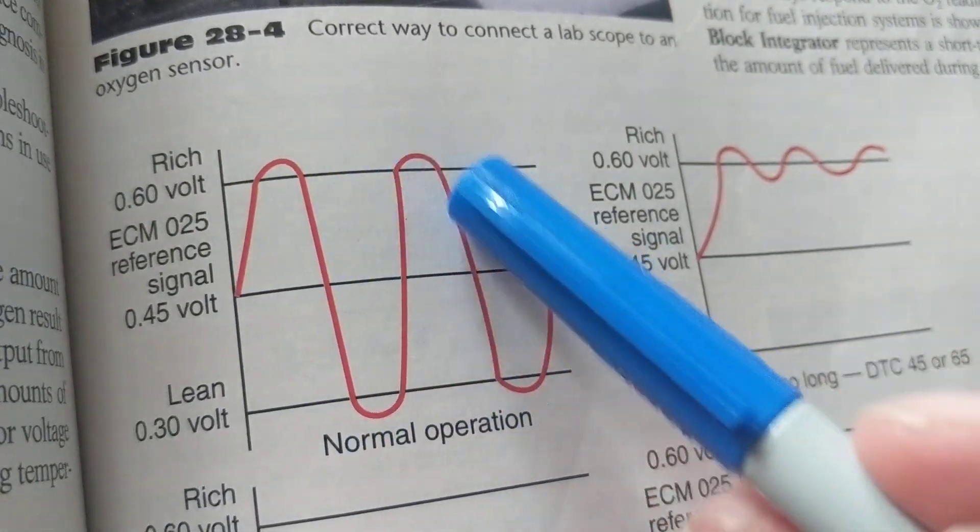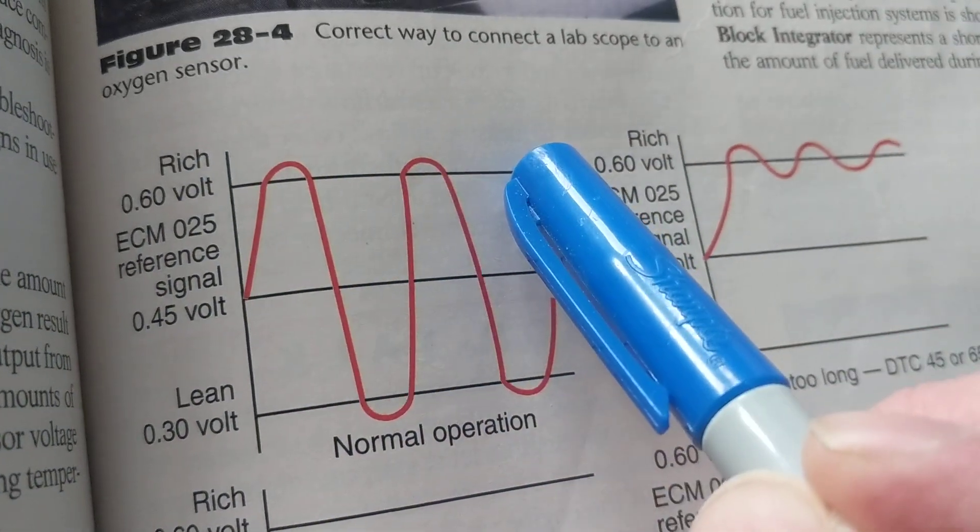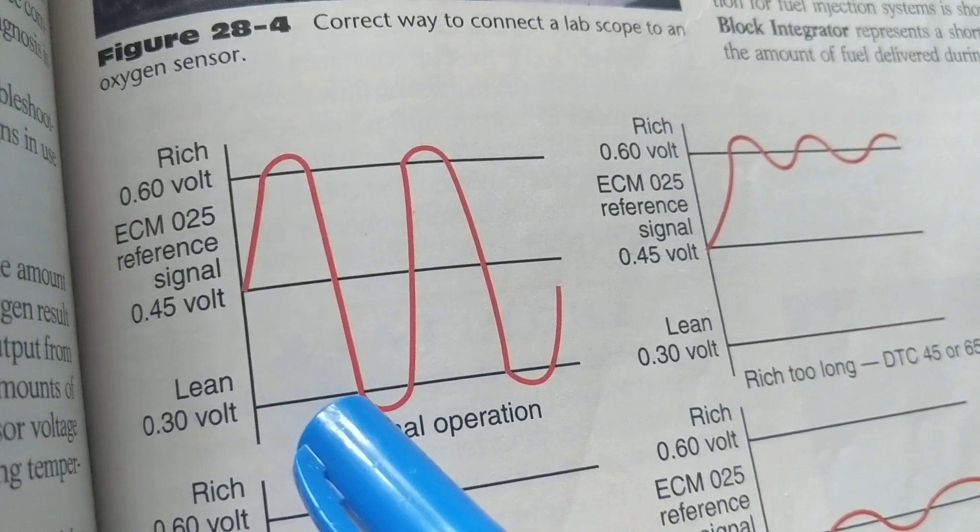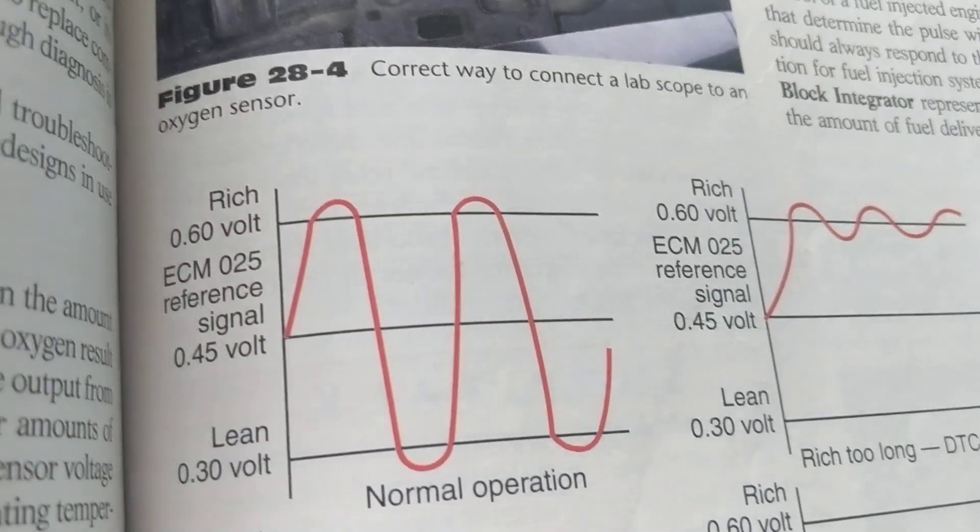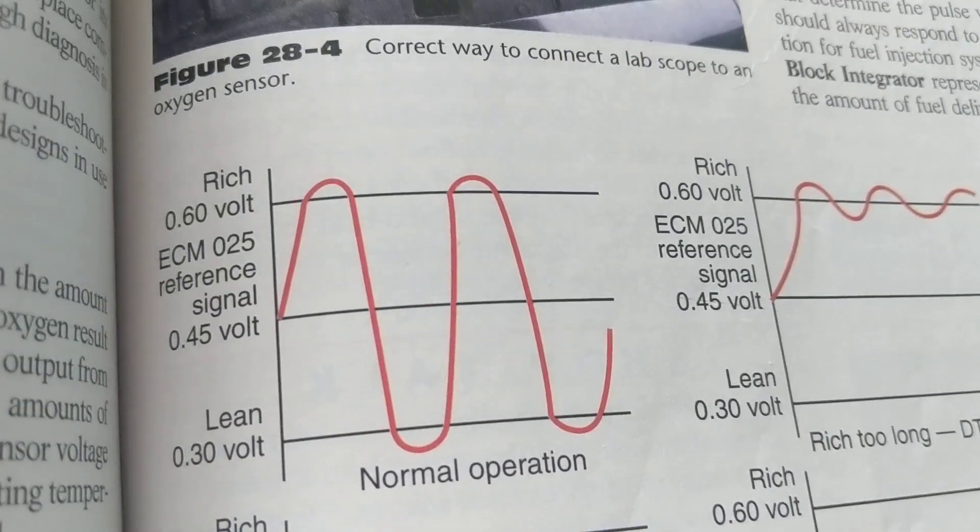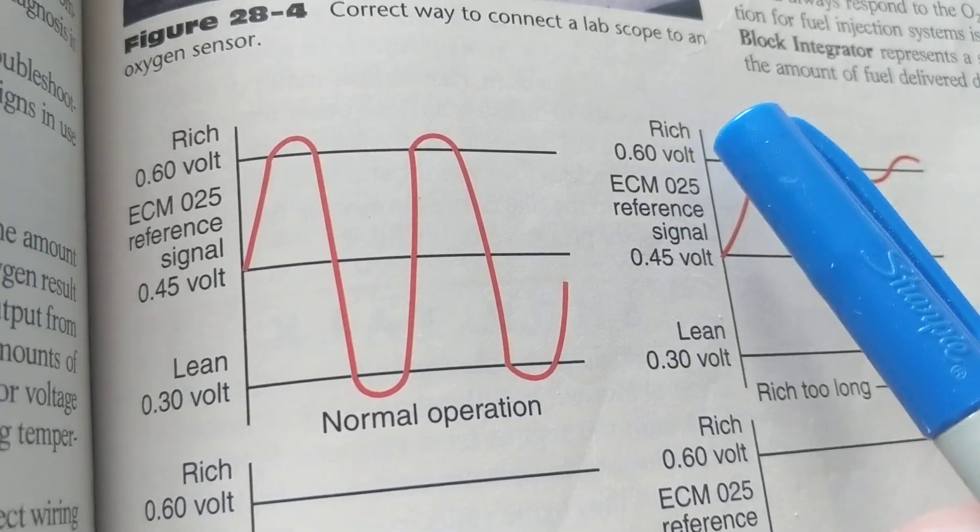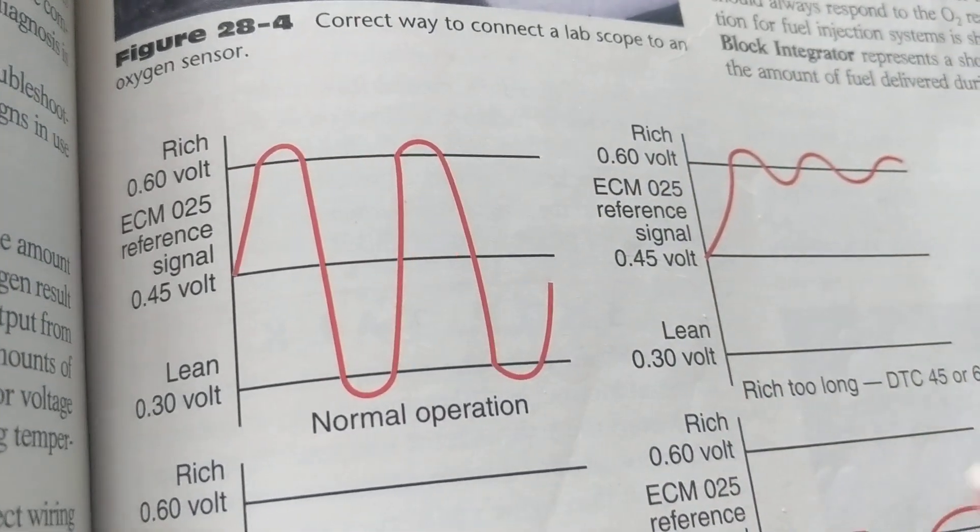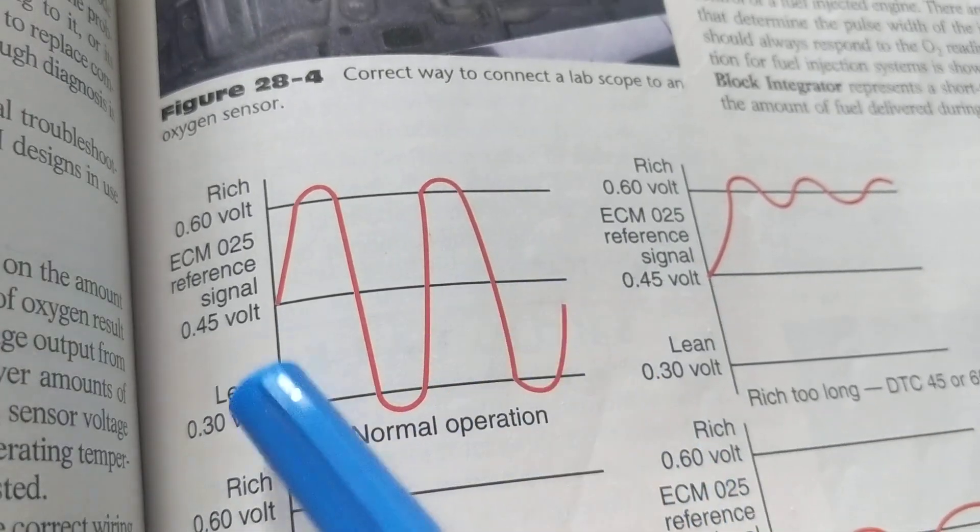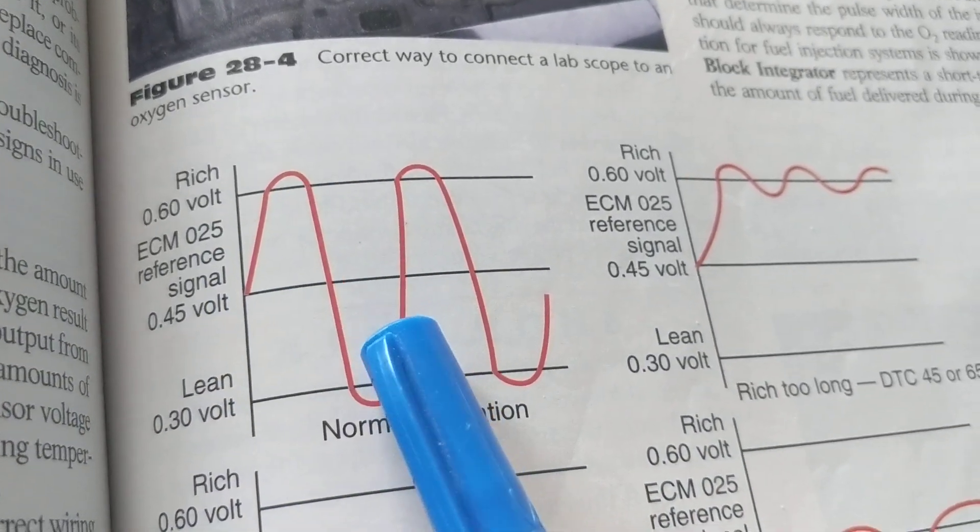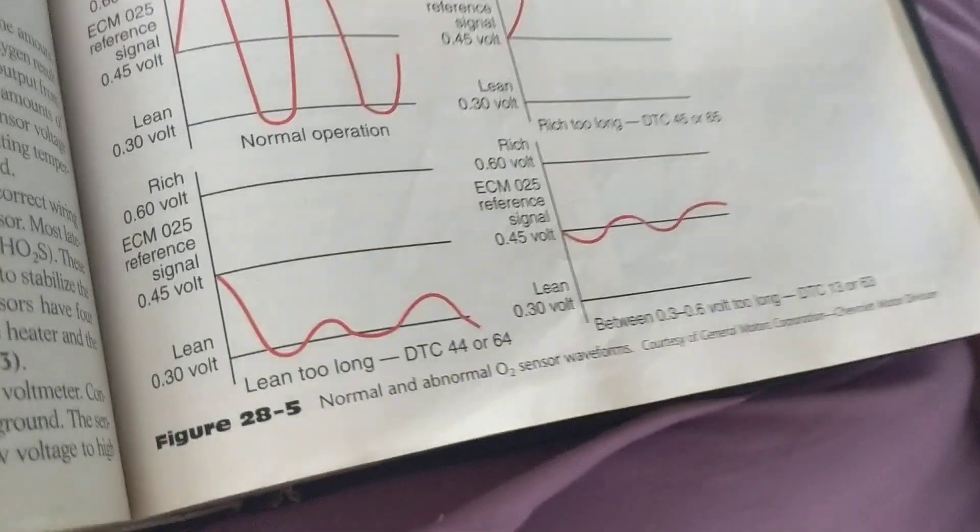We want to see these oscillations. That means that the oxygen sensor is detecting these changes, either rich or lean conditions, and then the computer will adjust the fuel injectors to either give more fuel or less fuel. Why? So we can have that 14.7 parts of air to one part of fuel as close as possible. This is the ideal type. If you would put your scope here, you want it to go up and down.